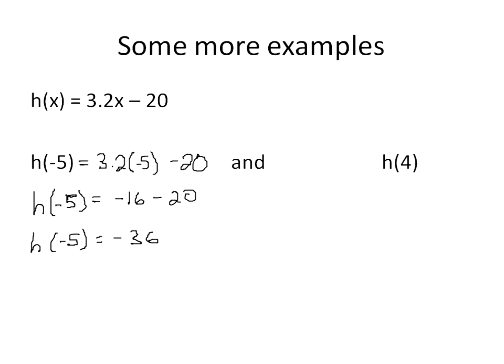So my function at the point negative 5 is equal to negative 36. Now I'm going to solve for that same function, h, at the point 4, positive 4. So I'll rewrite this over here so I've got a little bit more space.